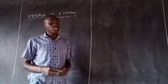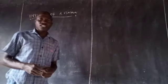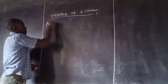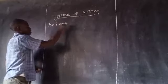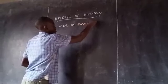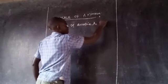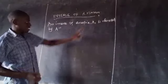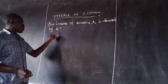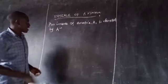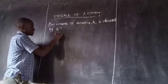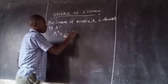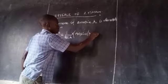Today, we are going to switch to the inverse of a matrix. The inverse of matrix A is denoted by A inverse, written as A to the negative 1. It is given by: A inverse equals 1 over the determinant of A, times the adjoint of A.